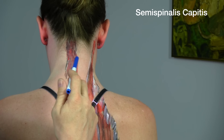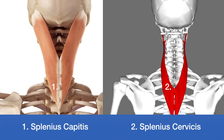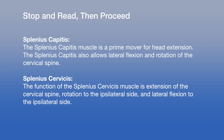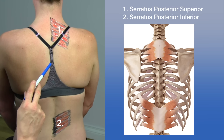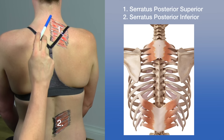While covering the erector spinae, we should also note the semispinalis capitis and splenius capitis, as they are essentially connected. Both originate from the spinous processes of C7 and T1 and the transverse processes of C7 to T4, inserting onto the occiput. When they contract bilaterally with the cervical spine fixed, they extend the head; when contracted unilaterally, they contribute to side bending and rotation.